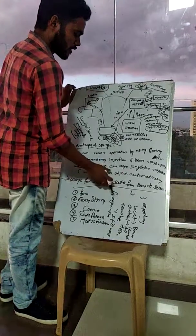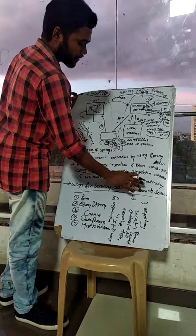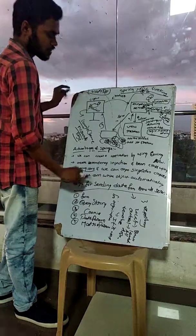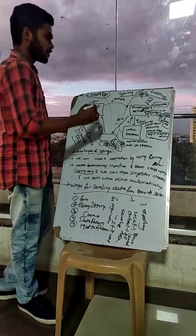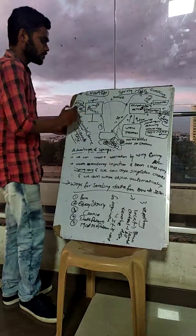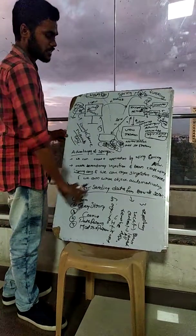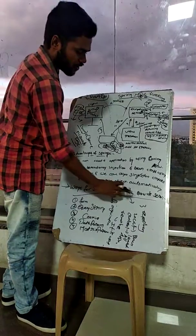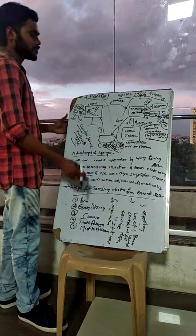We can also create singleton classes. Singleton classes means we can have only one class instance. We can autowire objects automatically. Object creation can be done by Spring.